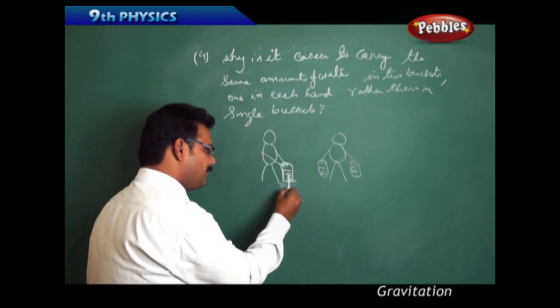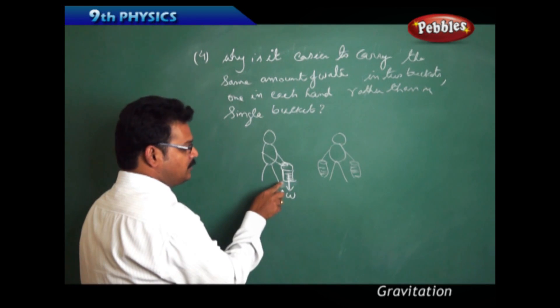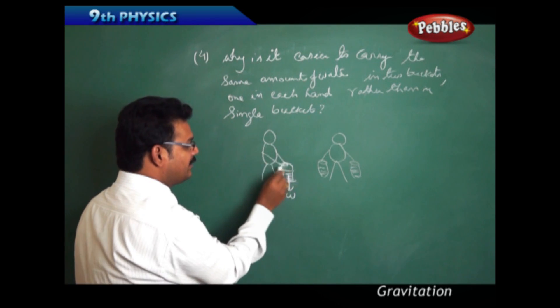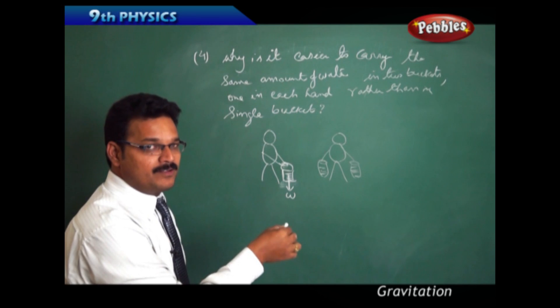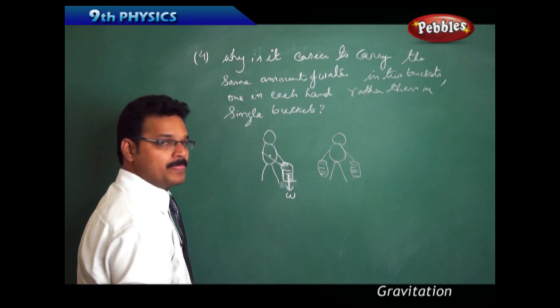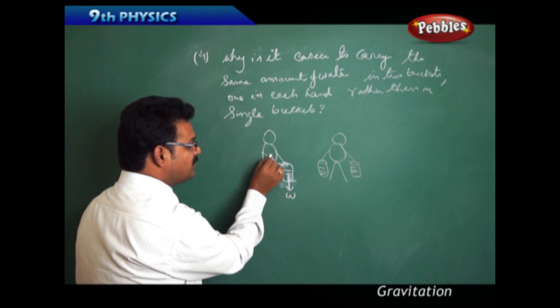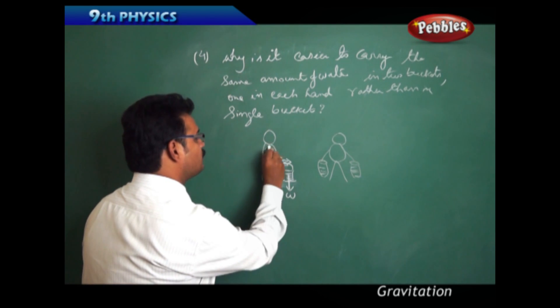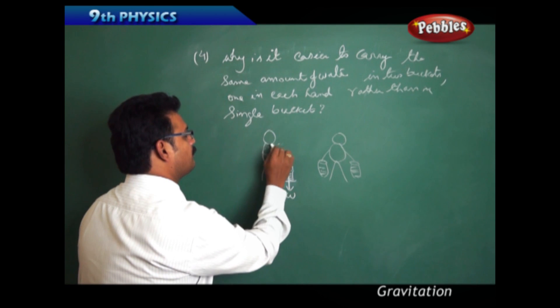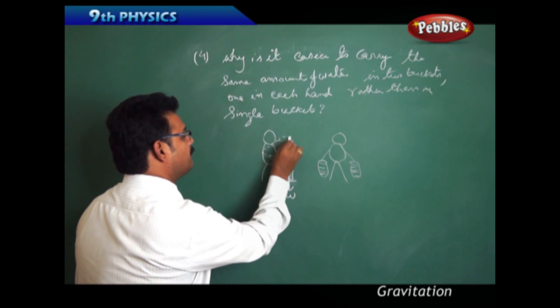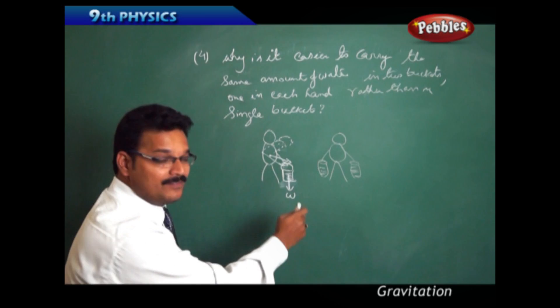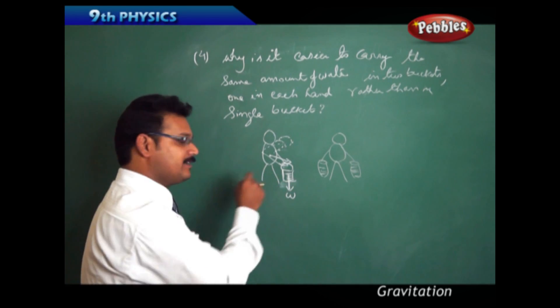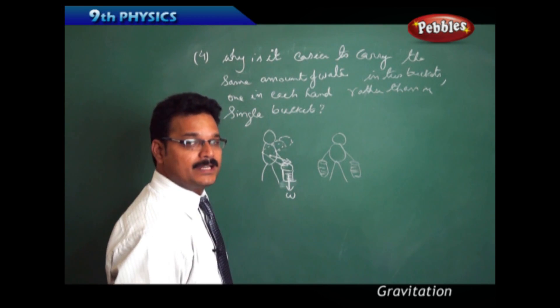Because here the whole bucket weight is acting downwards and this bucket weight influences the person's weight, so the center of gravity shifts. The center of gravity should be at the center of the person, but because of this weight the center of gravity shifts so that the person has to bend a little bit to carry the bucket. So it's very hard.